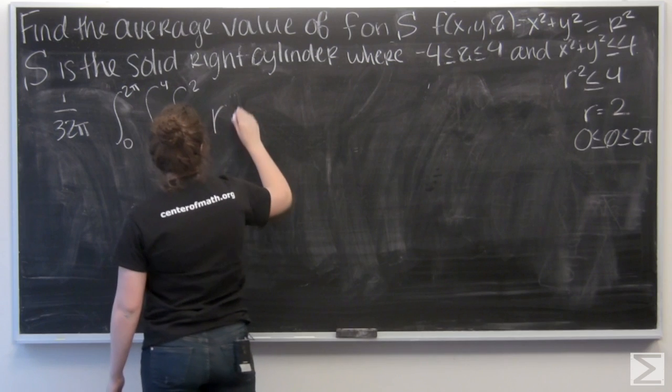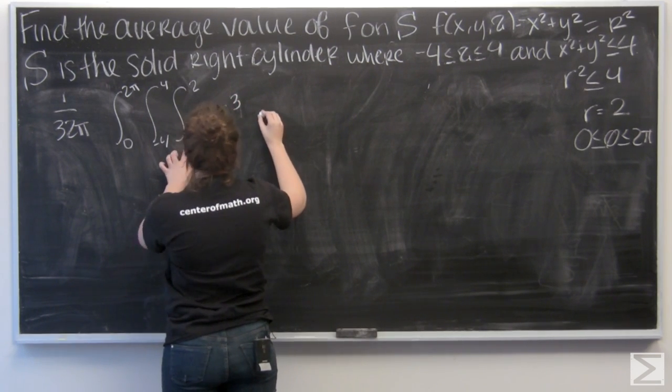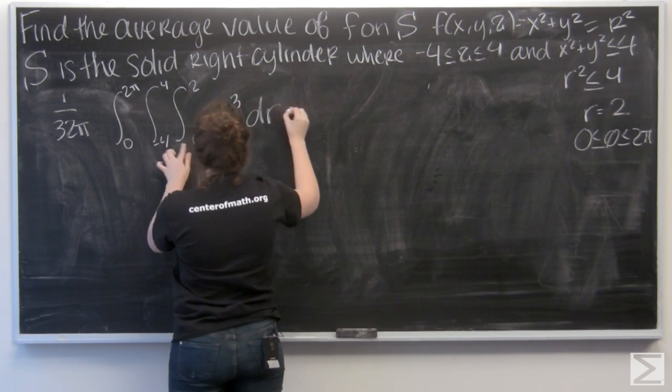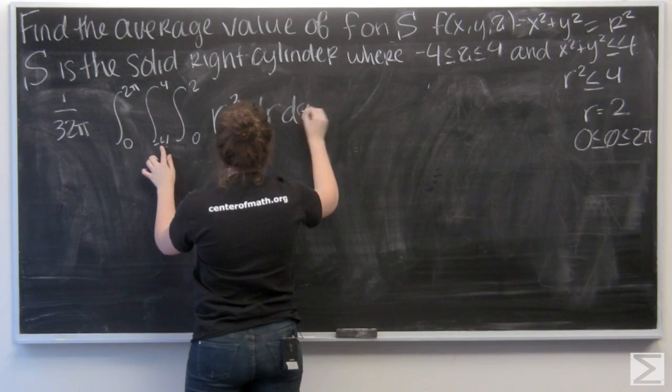This is actually going to become r to the third. Then I have dr, dz, and d theta.